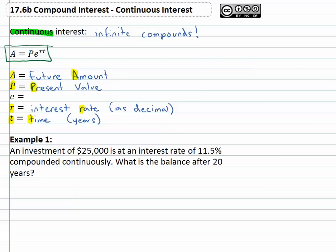Now we don't need an N for the number of compounds, because the number of compounds is going towards infinity. It's just always earning interest. And so that's where we get this letter E.